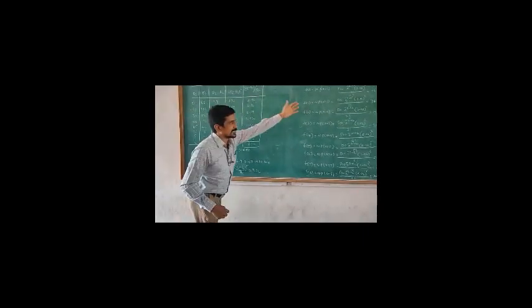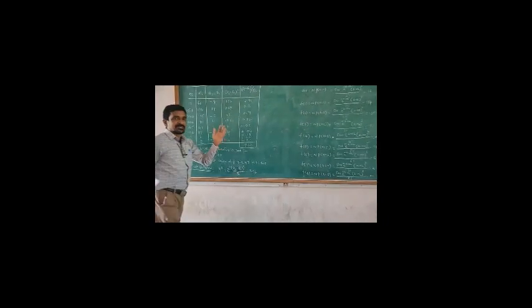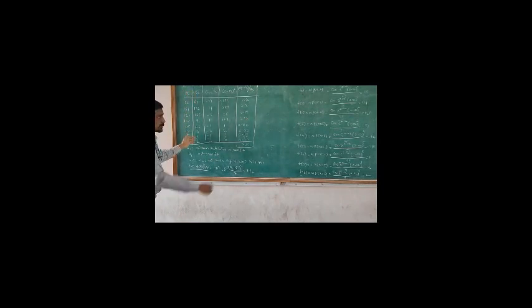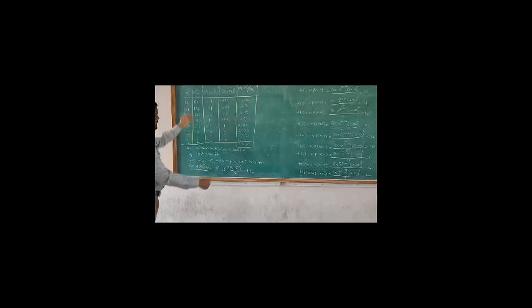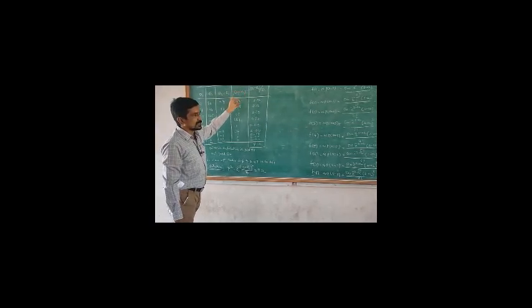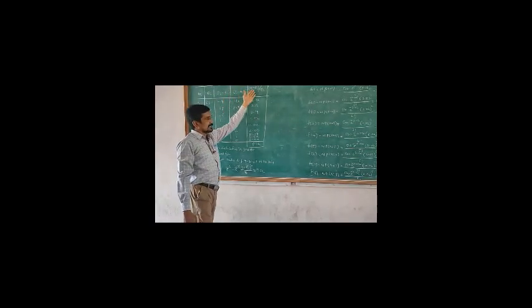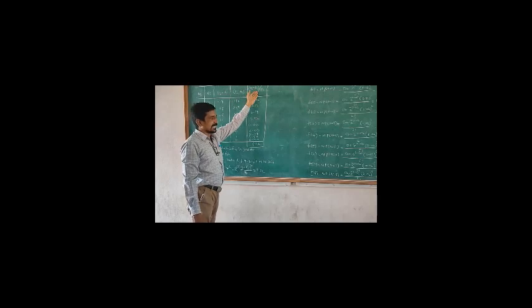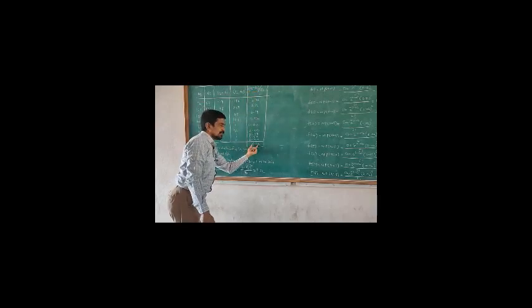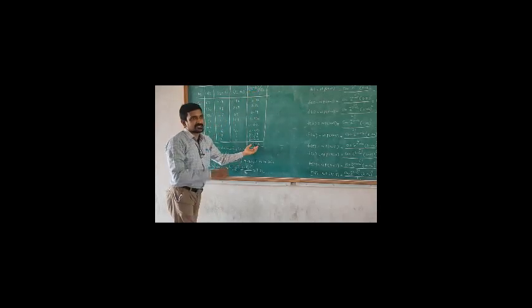We already calculated the expected frequencies. The observed frequencies are also there. Now we take the differences between the observed and expected values, compute (O_i minus E_i) squared divided by E_i for each, and sum them. The total chi-square calculated value equals 9.32.